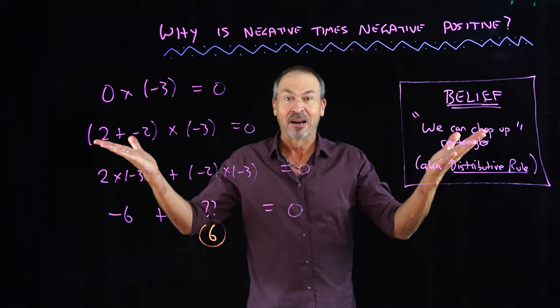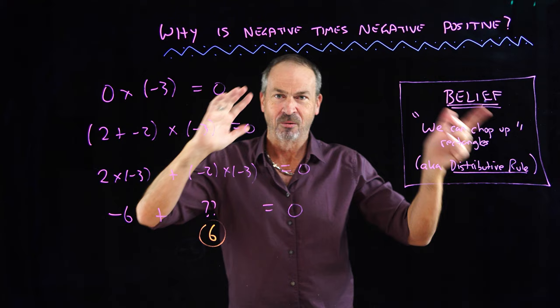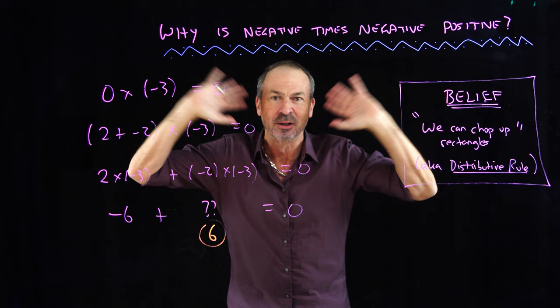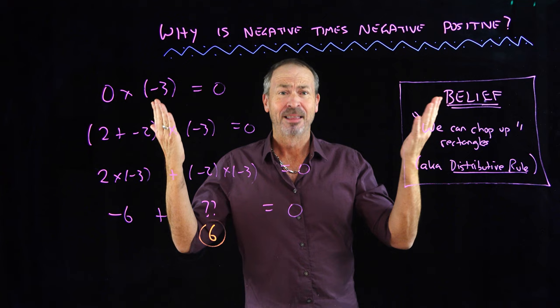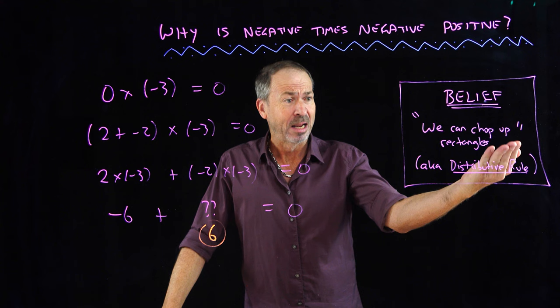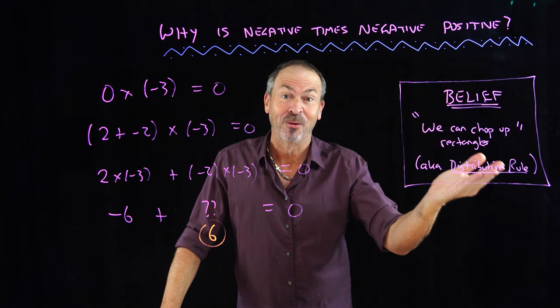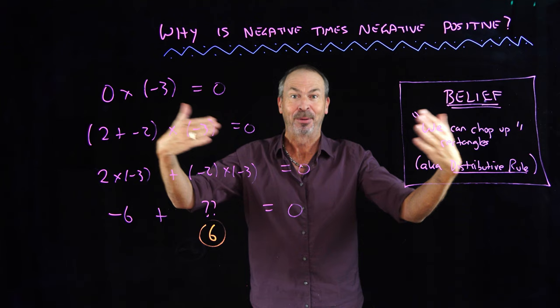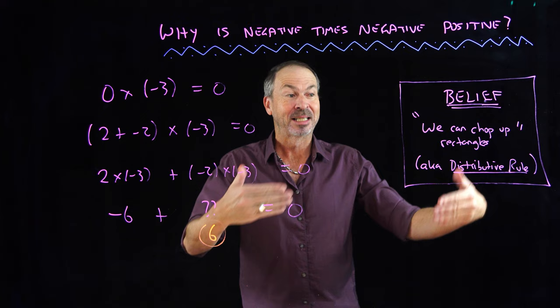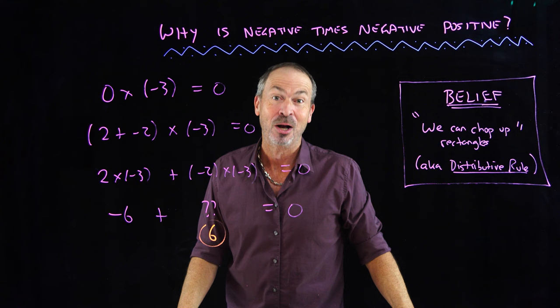This is the true explanation of why negative times negative is positive — it's a logical consequence of believing we can chop up rectangles no matter what, that the distributive rule holds for all types of numbers. Young students aren't really told this true reason; instead we get analogies about soldiers on number lines or films running backwards. But really it's a choice: we choose to believe the distributive rule, and our beliefs model the real world beautifully when it's appropriate. That's the beauty and the wonderful mystery of mathematics.